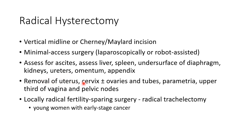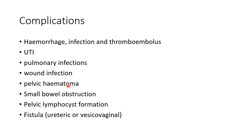We have to remove the uterus and cervix, plus or minus ovaries and tubes, parametria, upper third of vagina, and pelvic nodes depending on the stage of the tumor. Radical trachelectomy is a locally radical fertility-sparing surgery, done in young women with early-stage cancer to preserve fertility.